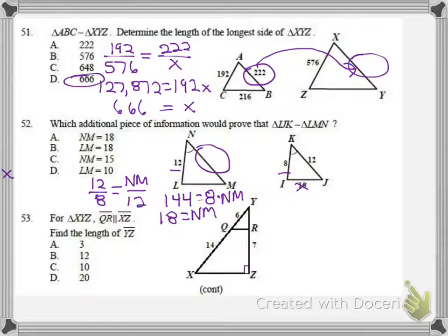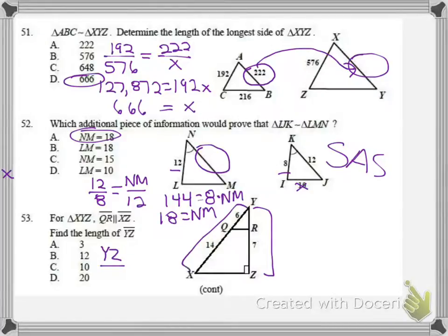Now for number 53, we need to find the value of YZ, which is the whole thing. So YZ would be corresponding to this side on the other one, which would be the 6 and 14, or 20. Then I could take maybe the bottom pieces, 14 and 7. It'd be 7 over 14.